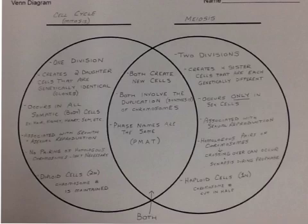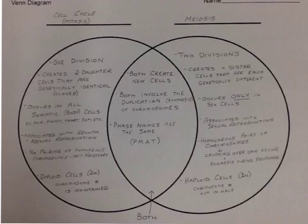With meiosis, we end up creating haploid cells — symbolized as 1N — meaning the chromosome number is cut in half. For example, human beings have 46 chromosomes, but sperm and egg only need 23 chromosomes. So what happens is: chromosomes duplicate, going from 46 to 92. Then there are two divisions in meiosis. The first division takes 92 down to 46 by pulling homologous pairs apart. The second division pulls the chromatids apart. We end up with four genetically different cells with 23 chromosomes each — the haploid number. The full 46 is restored at fertilization when a new human being is created.